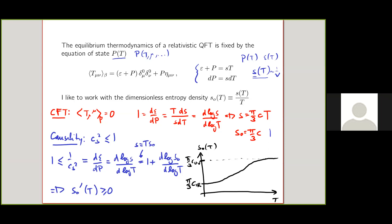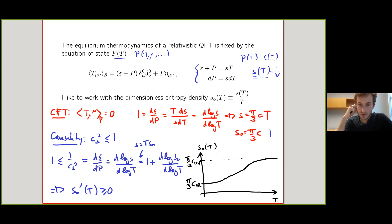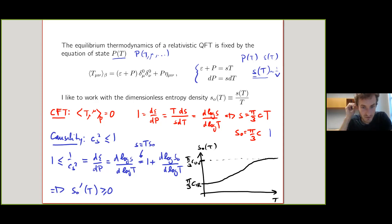A question from the audience: does this C-function match the Zamolodchikov C-function along the flow? No, it's a different C-function. They match at the CFT fixed points, but along the flow the Zamolodchikov C-function is a vacuum two-point function of the trace of the stress tensor, whereas this is a thermal quantity. In a CFT, the thermal state can be mapped to the vacuum by a conformal transformation, but in a QFT it can't, so they're different in general. Even if we didn't care about thermal physics, this gives an alternative proof of the C theorem — we're learning a lot just from imposing causality in thermal states.